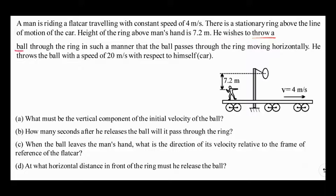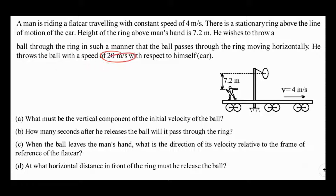He wishes to throw a ball through the ring such that the ball passes through the ring moving horizontally. So the ball should be moving horizontally when it goes through the ring, meaning the vertical velocity of the ball should be zero at that point. He throws the ball with a speed of 20 meters per second with respect to himself.